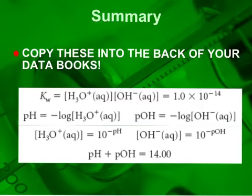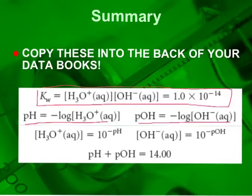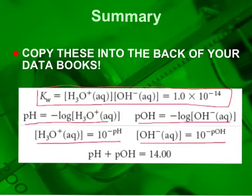Here is a summary of the important formulas for this video. The equilibrium expression for the ionization of water is [H₃O⁺][OH⁻] = 1×10⁻¹⁴. pH is the negative log of [H₃O⁺], and pOH is the negative log of [OH⁻]. To get [H₃O⁺], raise 10 to the power of negative pH; to get [OH⁻], raise 10 to the power of negative pOH. Finally, pH + pOH = 14.